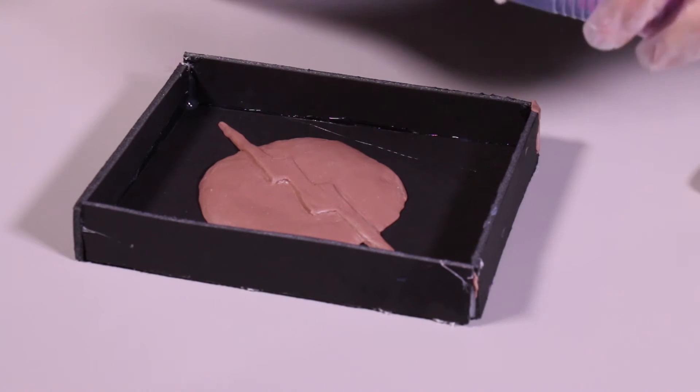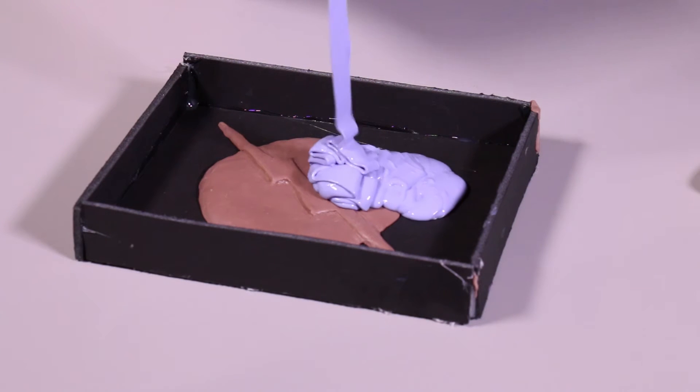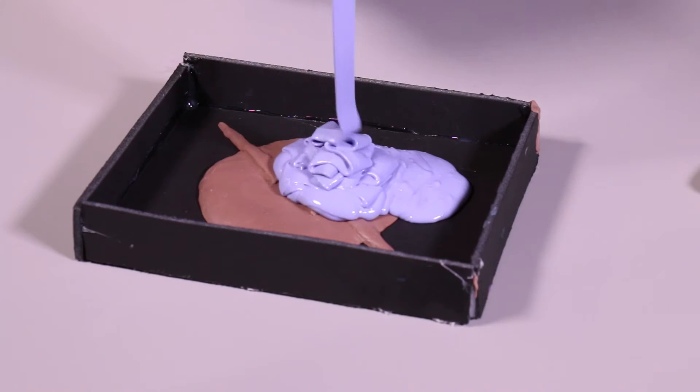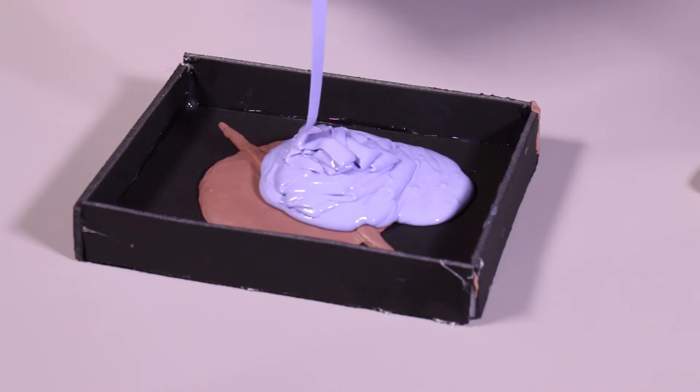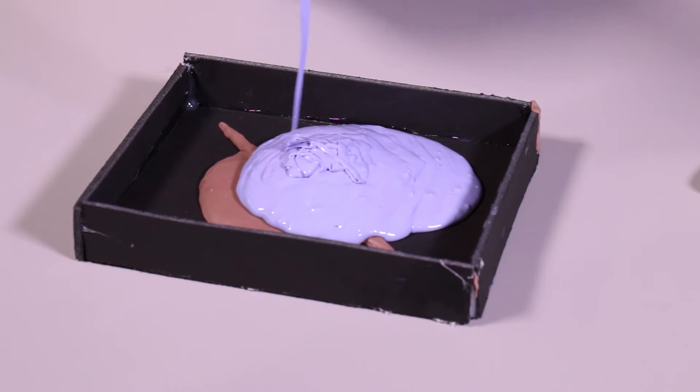Now we will grab the mold box and get ready to pour the silicone. When you pour the silicone, you want to make sure you're at a high angle with a steady stream of silicone flowing down over the mold. This will help prevent air pockets and will also give you overall coverage for your item.